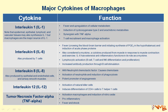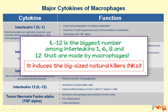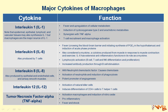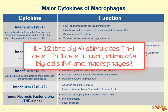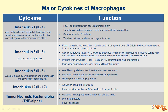Interleukin-12 activates natural killer cells, which are big cells. This gives you a mnemonic: the highest number goes with the natural killer cells that are big cells. Interleukin-12 also induces differentiation of CD4-positive cells and helps them differentiate into T helper 1 cells. We will talk about this in more detail later.